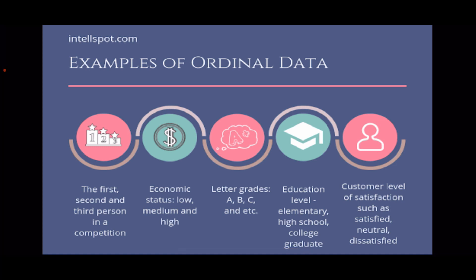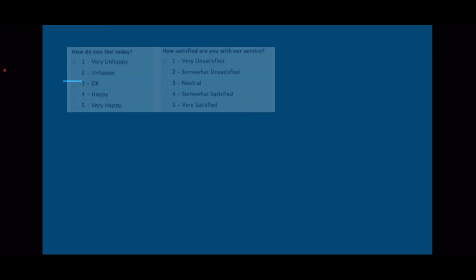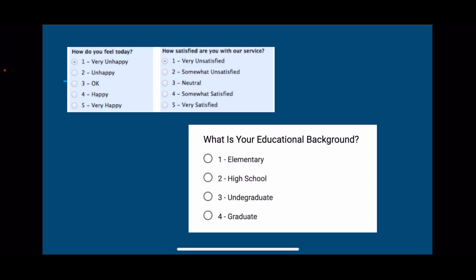Other examples include economic status — low, medium, and high — letter grades, education level attainment such as elementary, high school, college, and graduate, and customer level of satisfaction such as satisfied, neutral, and dissatisfied. These are examples of research questions in a survey that could yield ordinal data.